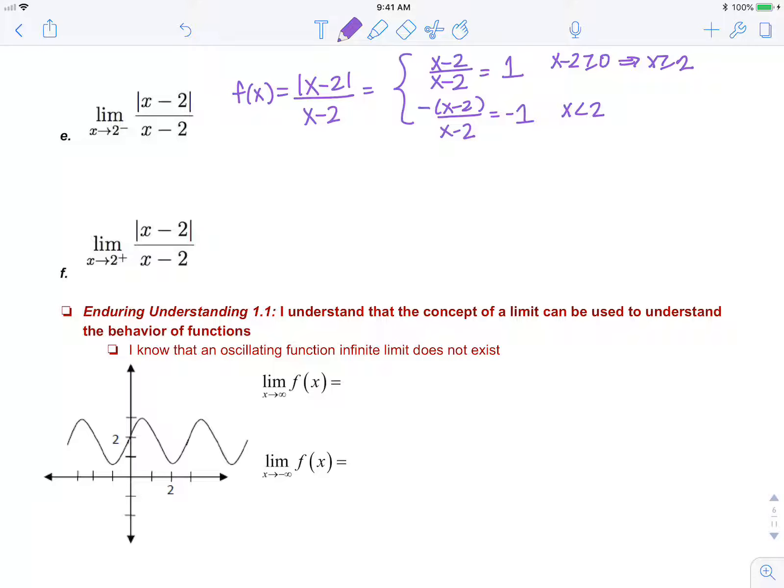So now that we have these pieces, we can evaluate the limit much quicker. So the first limit for e is the limit as x approaches 2 from the left. So that's going to be using the piece less than 2, which is negative 1.